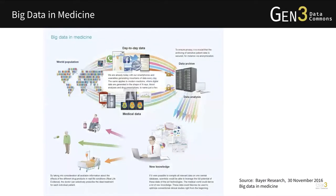Trending research in biomedical science juxtaposes precision medicine and public health with terms like big data, data science, and deep learning. Technological advancements permit the collection and merging of large heterogeneous datasets from different resources — from day-to-day data including electronic health records, social media posts, and wearables, and from medical data such as electrocardiograms, X-rays, and MRI. Complex algorithms supported by high-performance computing allow one to transform these large datasets into knowledge to make informative decisions and ultimately improve healthcare.